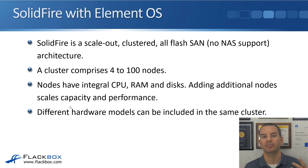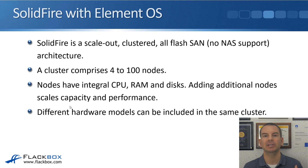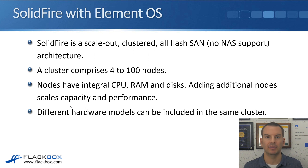The nodes have integral CPU, RAM, and disks. So unlike your FAS and AFF systems with ONTAP and your E and EF series systems, they don't have external disk shelves — the disks come in the same chassis. Adding additional nodes means adding the entire chassis, and doing that adds capacity and performance to the entire cluster.